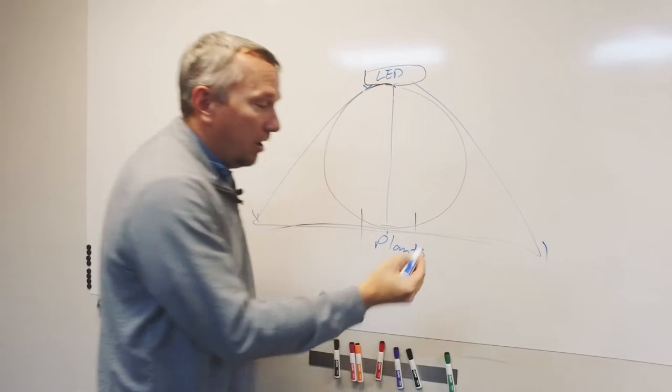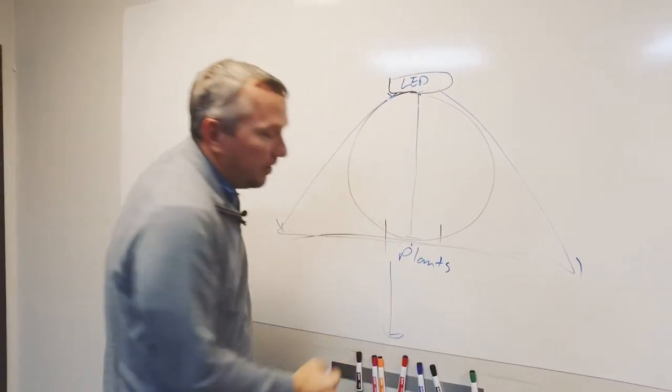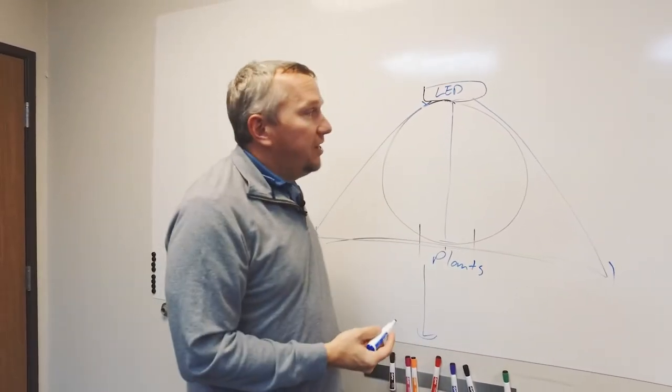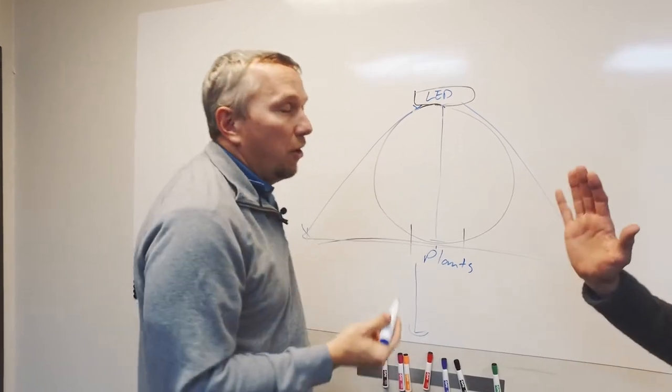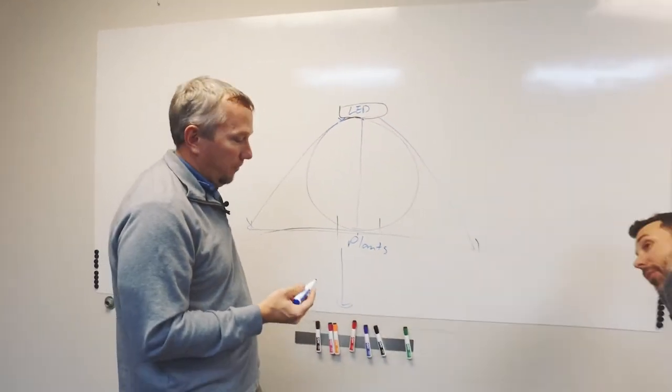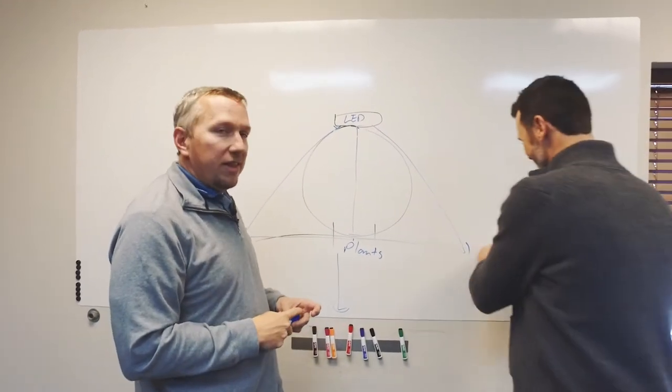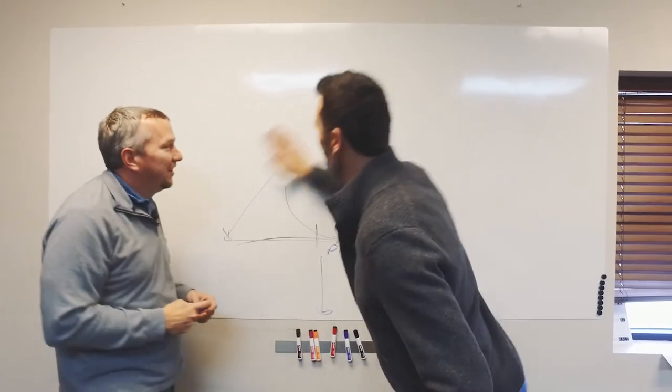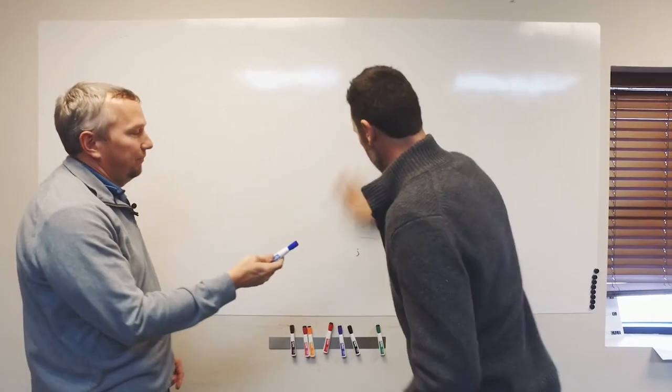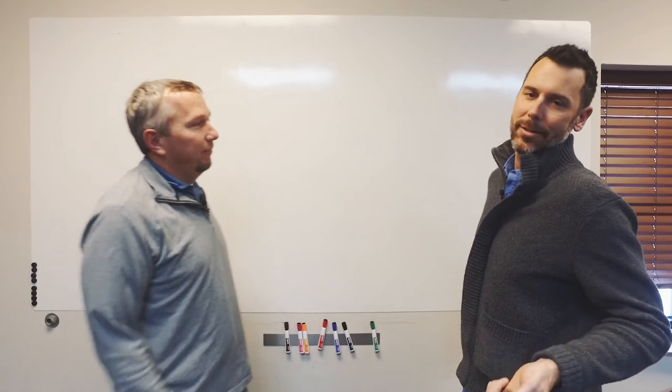So here's the same drawing. We have LEDs up here, plants down here. Now the plants are deep, you've got plants all the way down here. Light will decrease by an inverse—we're gonna lose everybody right there. No, I think they'll understand. Let me draw it one other way, this is the only way it makes sense to me.